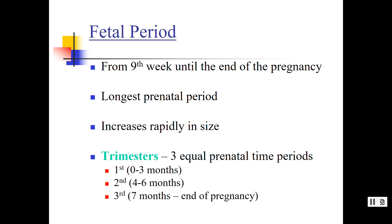Now the fetal period. The germinal period was two weeks, the embryonic period was about six weeks, and now the fetal period is about seven months — a long time. This is our longest prenatal period. What's happening during this period is the organism is starting to become stronger, growing, and becoming organized and connected.